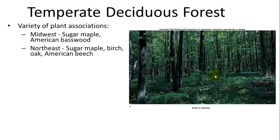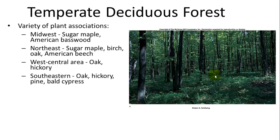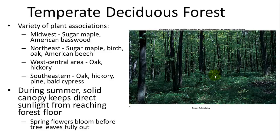There's a variety of plants associated with the temperate deciduous forest, including sugar maples and American basswood in the midwestern United States. In the northeast we have sugar maple, birch, oak, and American beech. In the west-central region, mostly oaks and hickories. In the southeast, oak-hickory-pine and some bald cypress. During the summer the canopy is overshadowed by the leaves, so not much sunlight reaches the forest floor. But in the spring, some flowers emerge before the buds have fully grown in their leaves, because the canopy is still open at that point.